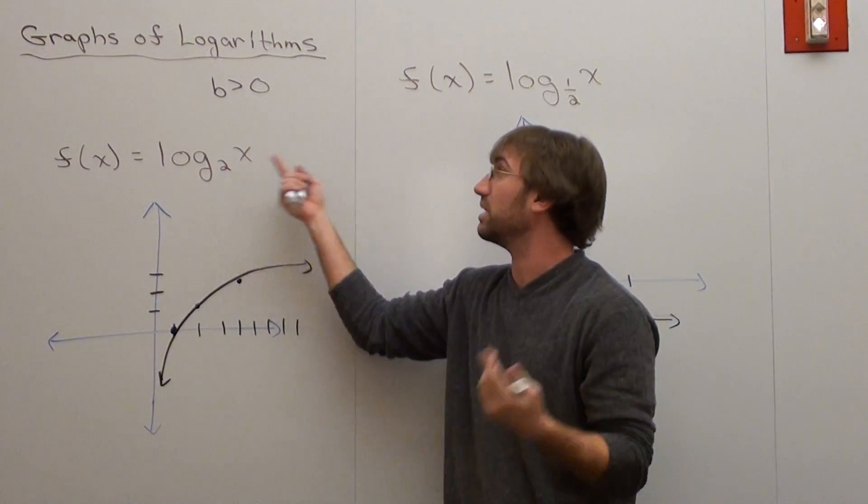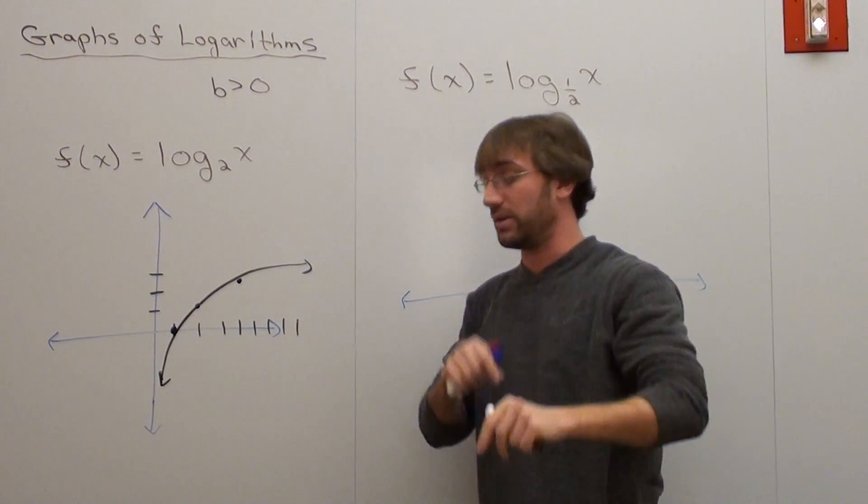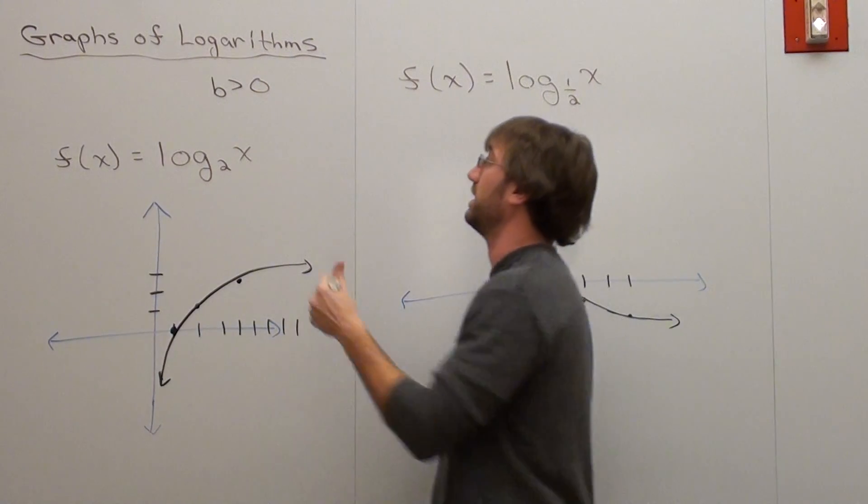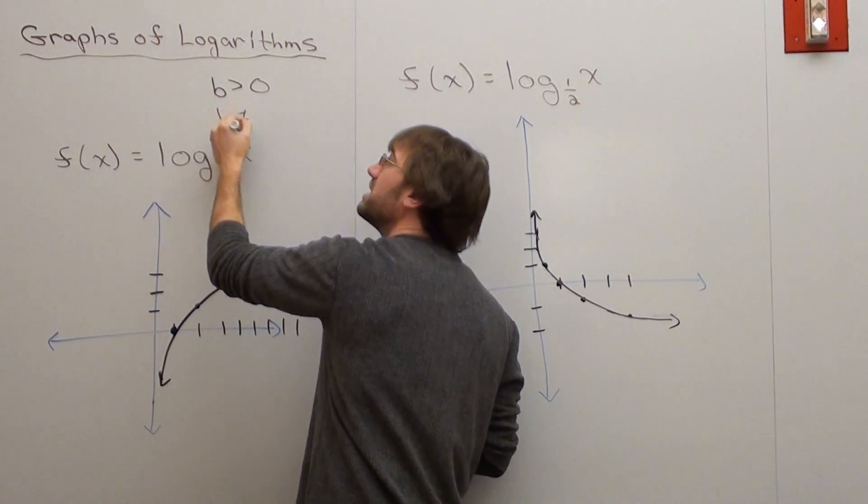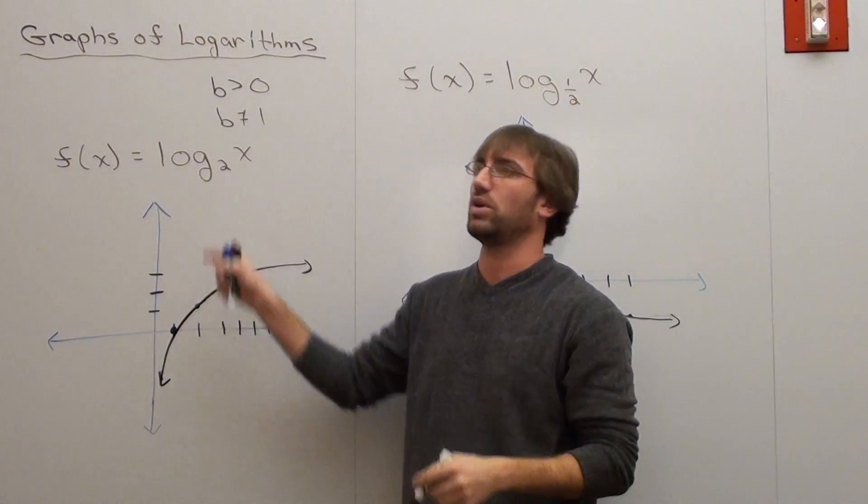Therefore when we do our inverse the base has to be positive. There is actually another stipulation behind that and that's that the base cannot be equal to 1. This number can't be equal to 1.